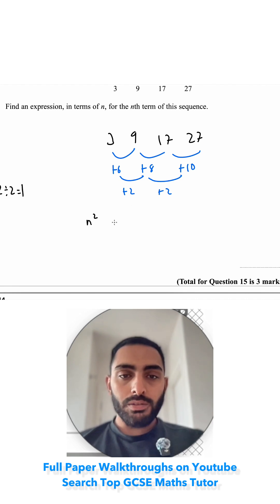Let's write out my square numbers. So I've got 1, 4, 9 and 16. And now I'm looking for the difference between n squared and my original sequence. From 1 to 3, I've added 2. From 4 to 9, I've added 5. From 9 to 17, I've added 8. From 16 to 27, I've added 11.